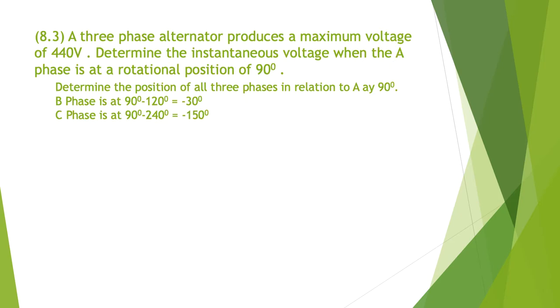This one's a little bit more difficult. A three-phase alternator produces a maximum voltage of 440 volts. Remember it said maximum voltage, so we're not dealing with RMS values here. Determine the instantaneous voltage when the A phase is at a rotational position of 90 degrees.